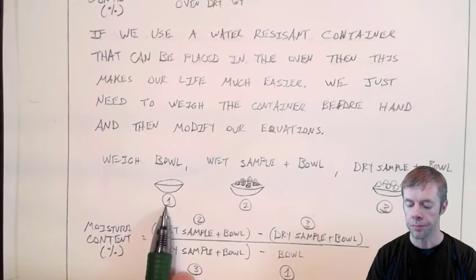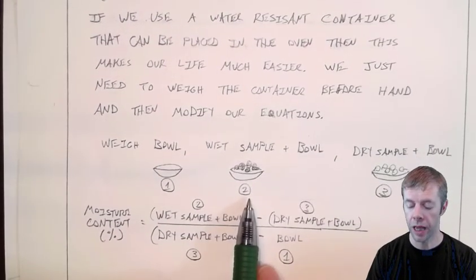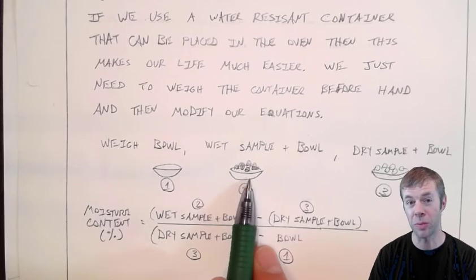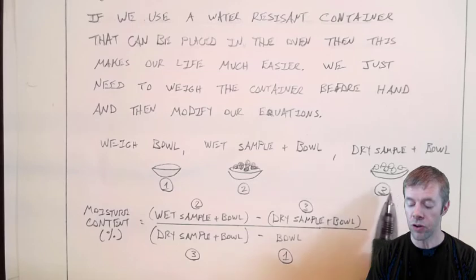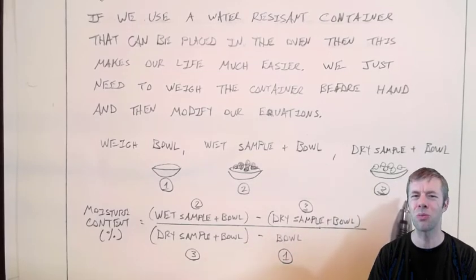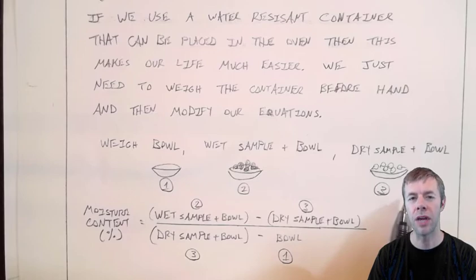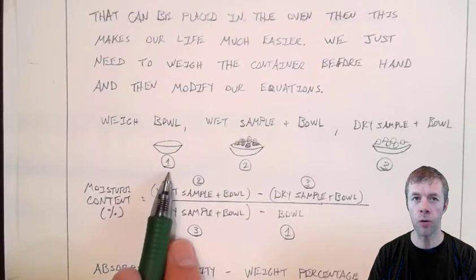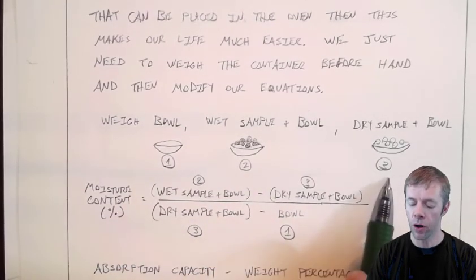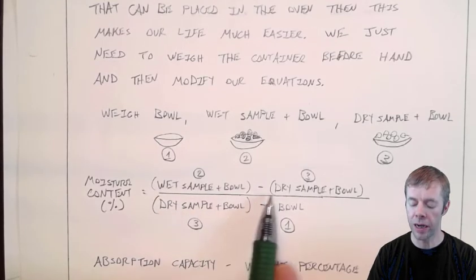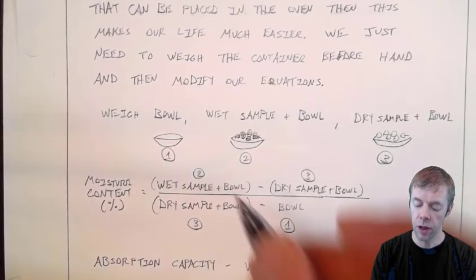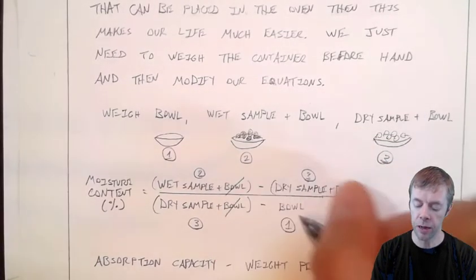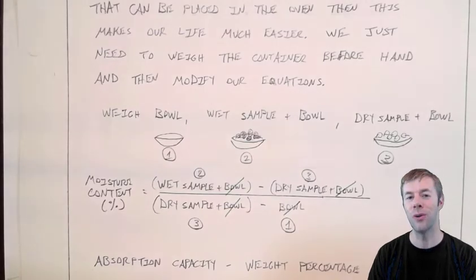For example, if we weigh the bowl, then we weigh out the sample and the bowl together — that's the wet sample. And then you dry the sample, put it in an oven, and cook it. If you take the weight of the dry sample plus the bowl — why is the bowl involved? Because it's easier just to weigh the bowl and the sample together than it is to try to isolate the sample for the measurement. So if we call this term 1, term 2, and term 3, our equation is modified: wet sample plus bowl minus dry sample plus bowl, divided by dry sample plus bowl minus bowl. This bowl cancels with this bowl, and this bowl cancels with this bowl, and you get what you want — the moisture content.